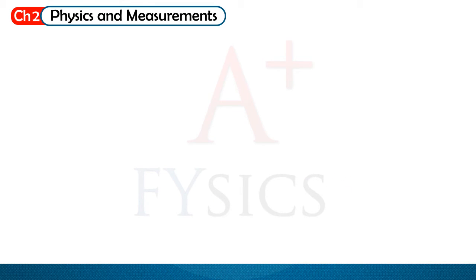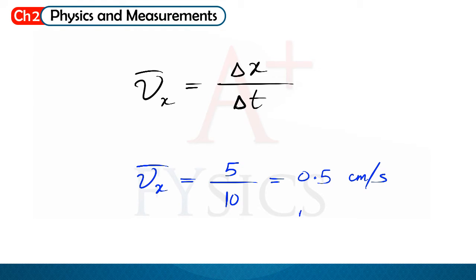Now, let us calculate average velocity. Average velocity is equal to displacement divided by time. So the answer is 5 divided by 10, which is 0.5 cm per second at an angle of 37 degrees.